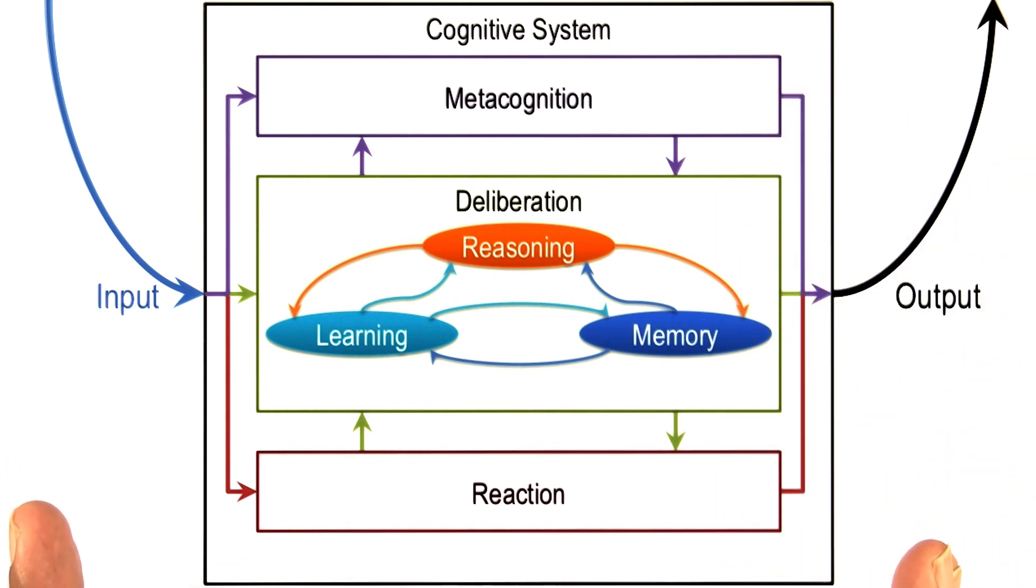This then is the overall architecture of the cognitive system. This is called the three layered architecture. We'll be returning to this architecture many times in this course.